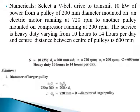First, find the diameter of the larger pulley. Using the equation N1/N2 = D2/D1, or equivalently N1·d1 = N2·D2, we can calculate the diameter of the larger pulley. Capital D = 720 millimeters.